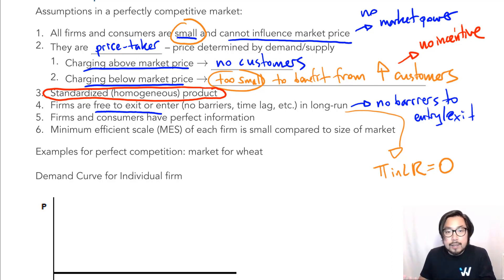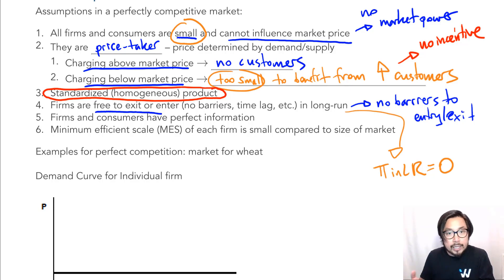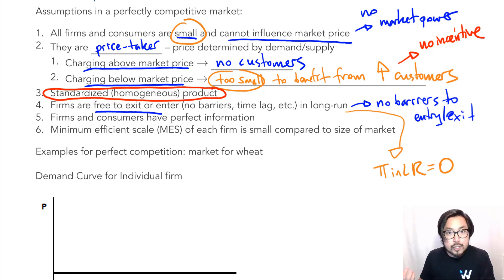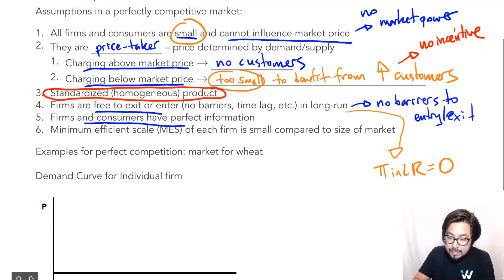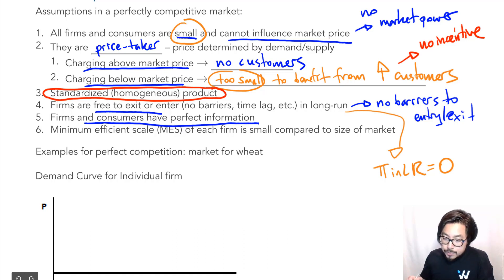The fifth characteristic is that consumers and producers have perfect information. Producers and consumers know how many firms and consumers are out there, and they know everything about the product. There is no asymmetric information — one side of the market doesn't have more information than the other. This is a very strong assumption, but it's required for the model.